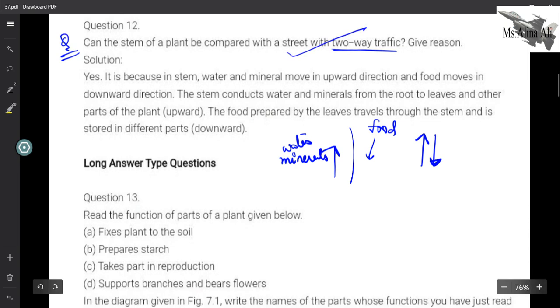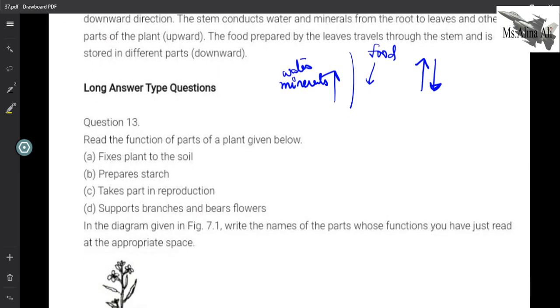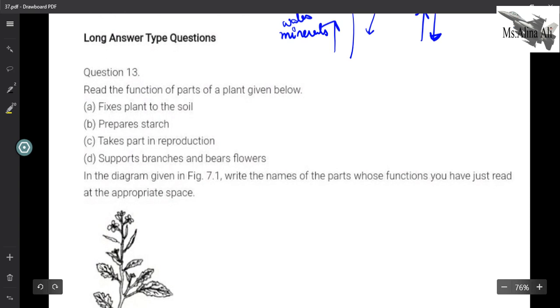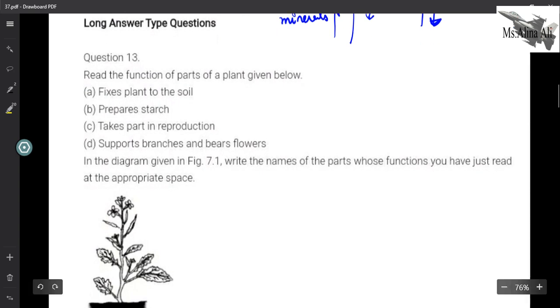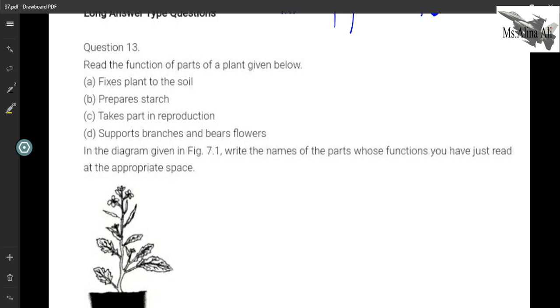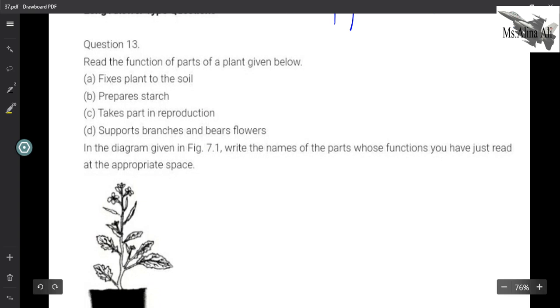Now here are some long answer type questions. Read the function of the parts of the plant given below. Part A says it fixes the plant to the soil - it is the roots. Next, it prepares starch. You know who prepares the food in the form of starch? Leaves.